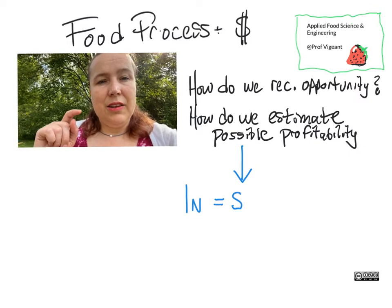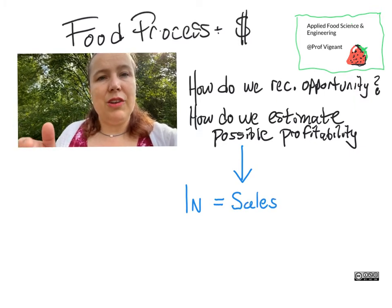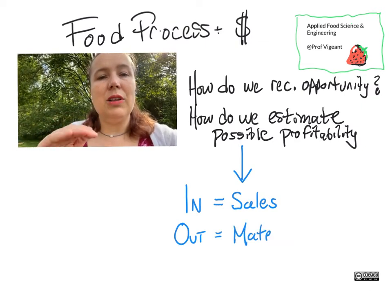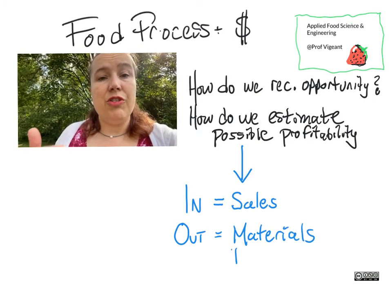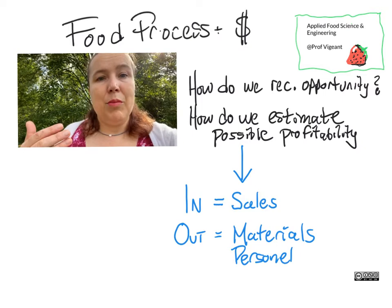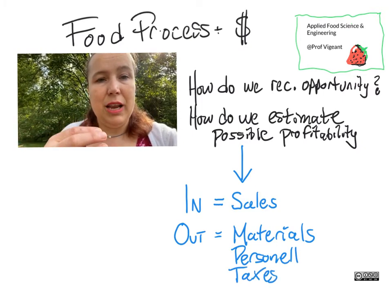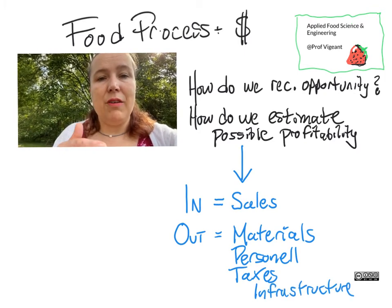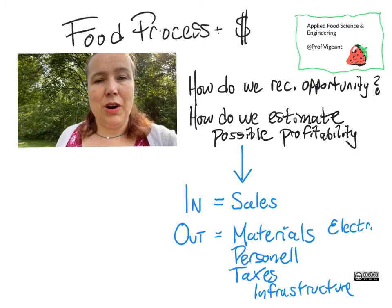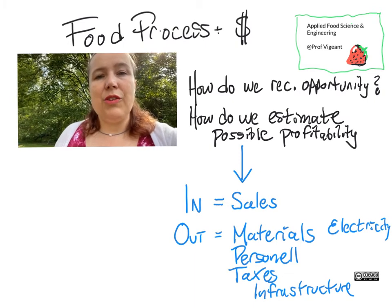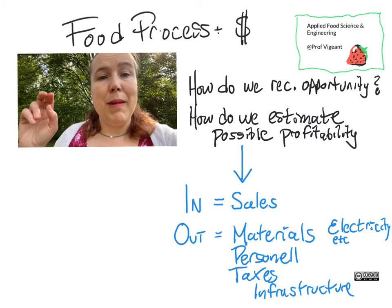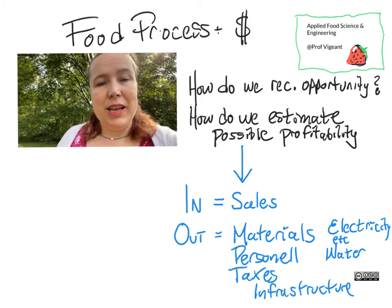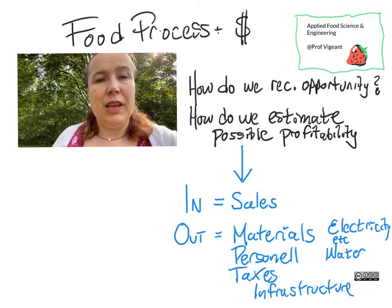I'd also like to build on this — not in this class — but I want to point out we're going to do a simplified version that is just looking at this instant in time. To do a more rigorous engineering version, we should also incorporate the time value of money, because any investment in infrastructure such as an ice cream popsicle freezing machine is going to have to be paid off over time. But we're going to do just the first-order version: essentially a mass balance, a material balance on money. What's going out? What's coming in? And how can we get an initial idea if we have profit potential?